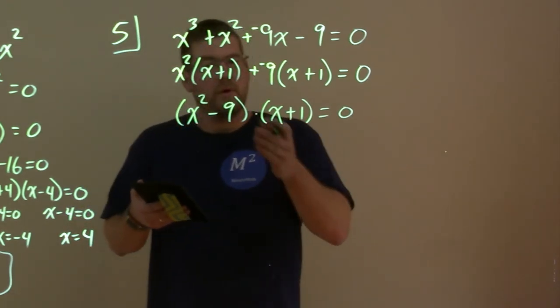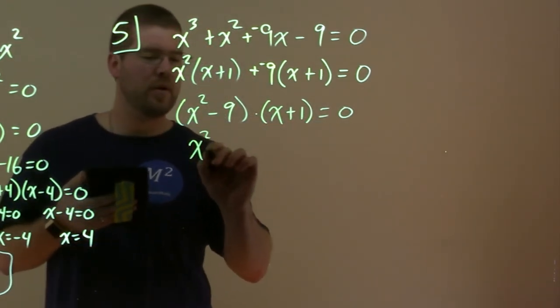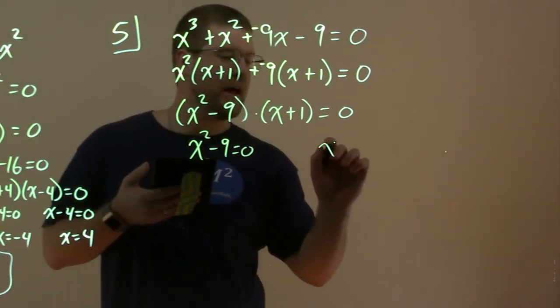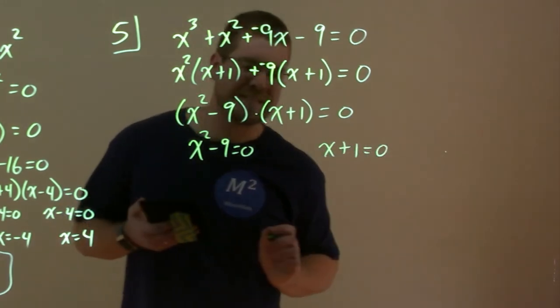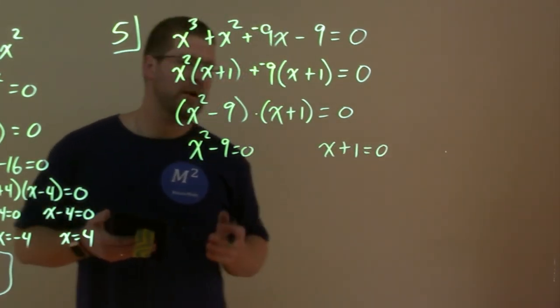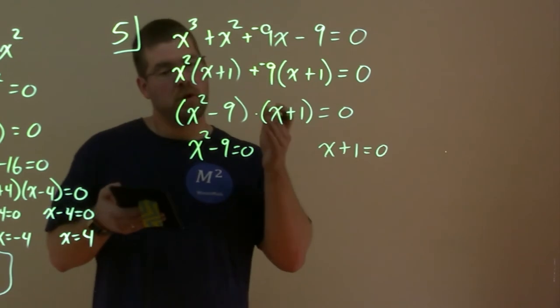So, like always, we can set both parts equal to 0. x^2 - 9 = 0, and x + 1 equal to 0. From there, we're going to solve each one individually for x.